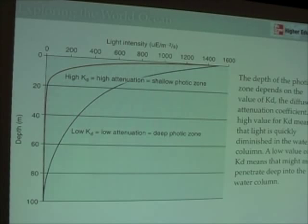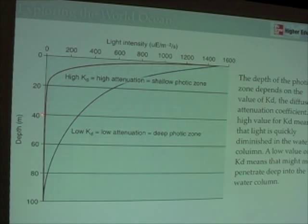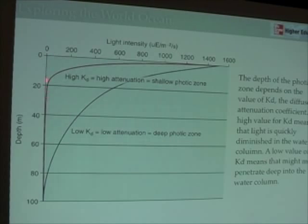Here is a more realistic example. With a high attenuation coefficient, light falls off very quickly — by 40 meters, there is hardly any light at all. The lighted portion of the ocean is called the photic zone. In this case, we have a very shallow photic zone because we have a very high KD, meaning a lot of absorption and scattering is occurring.